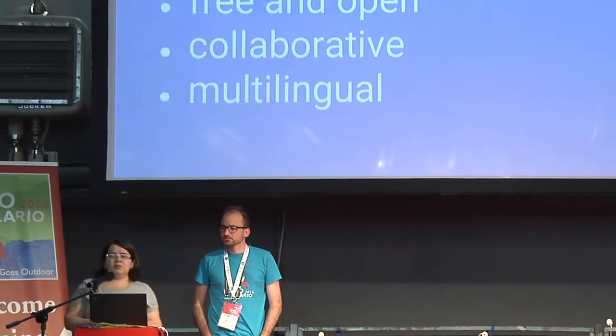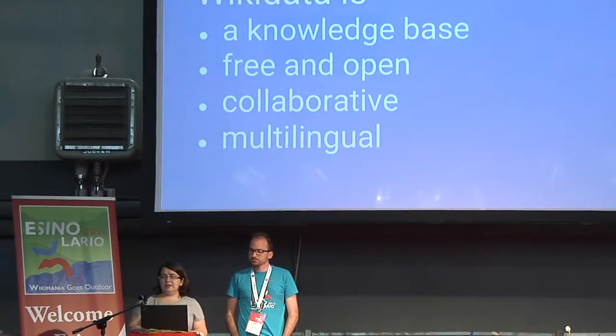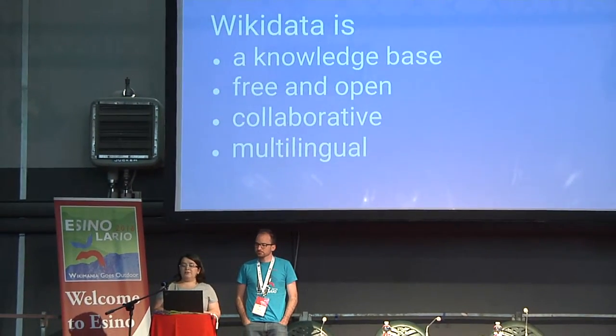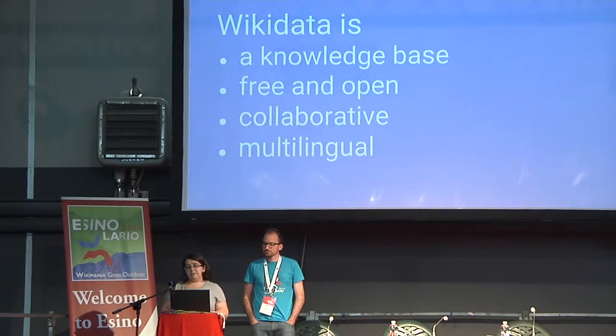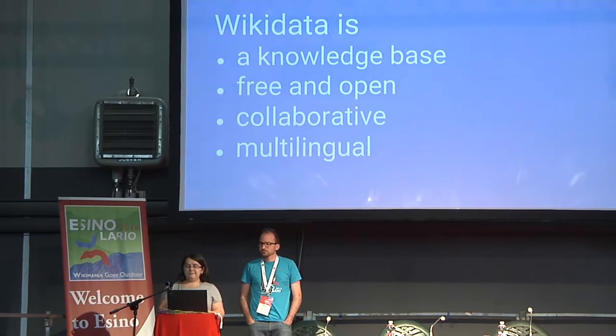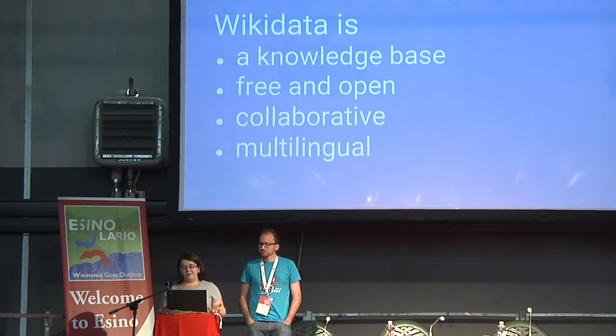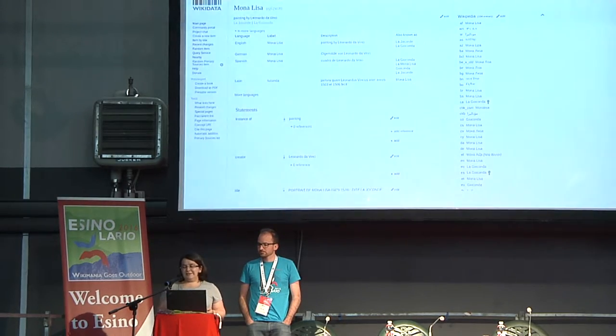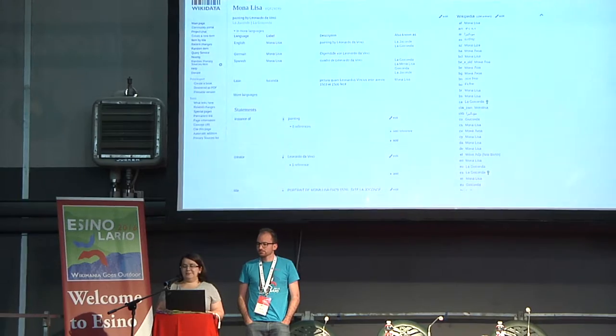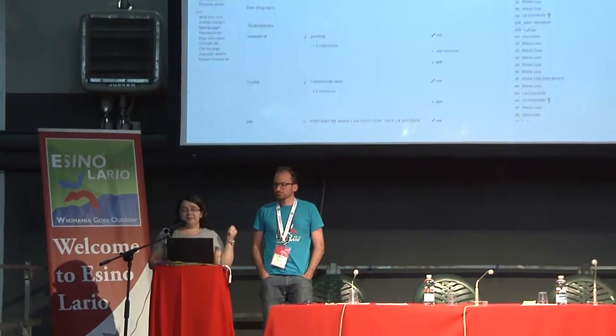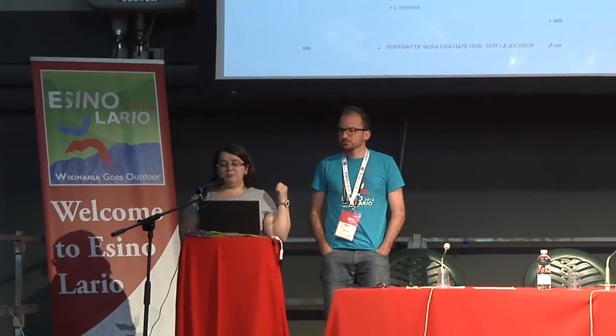Wikidata is all about giving more people more access to more knowledge. But what is Wikidata actually? It's a knowledge base. It's free and open. It's created collaboratively, just like Wikipedia. And it's multilingual. Those are a lot of buzzwords. This is what it actually looks like — this is the page about Mona Lisa, the painting, in Wikidata.